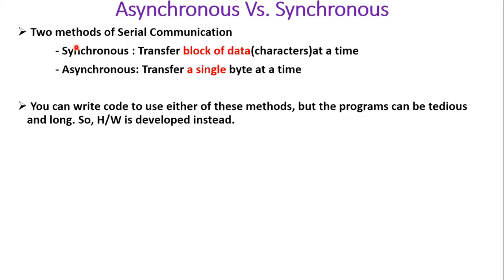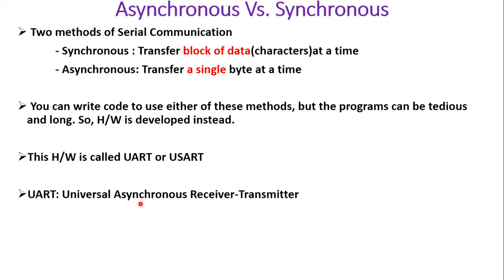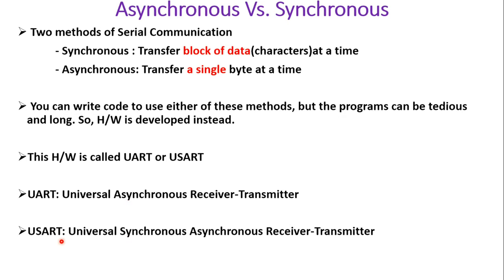Because writing the program for these two communication types is too lengthy, designers have developed hardware to do the same task — making the user's job much easier. This hardware developed for synchronous or asynchronous data communication is called UART or USART. UART stands for Universal Asynchronous Receiver Transmitter, and USART stands for Universal Synchronous/Asynchronous Receiver Transmitter. In Atmega32, a USART chip is built in, enabling both serial asynchronous and serial synchronous communication.